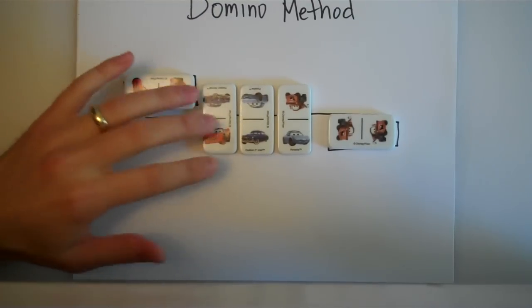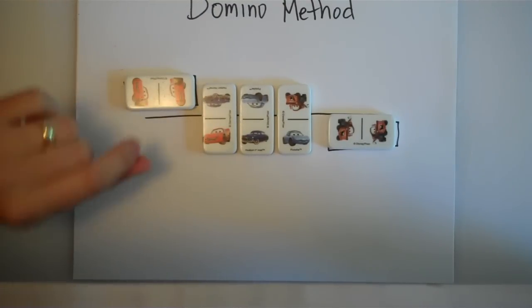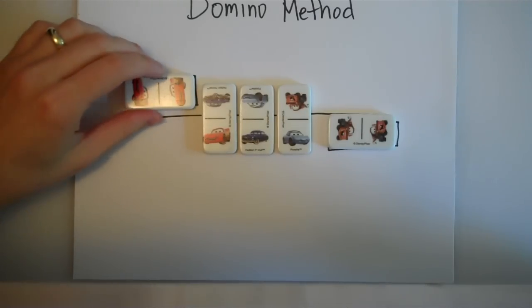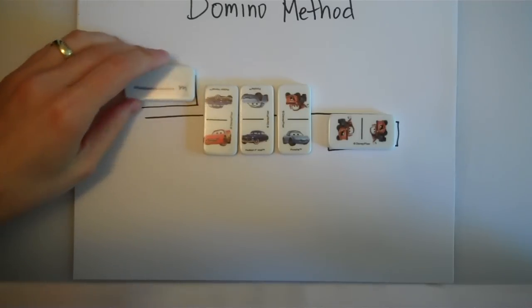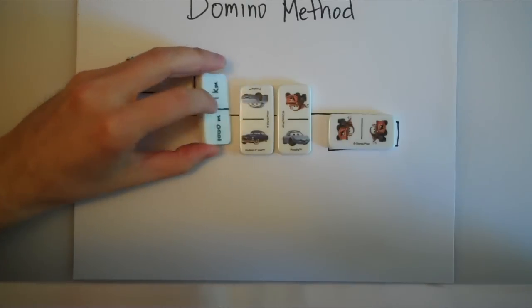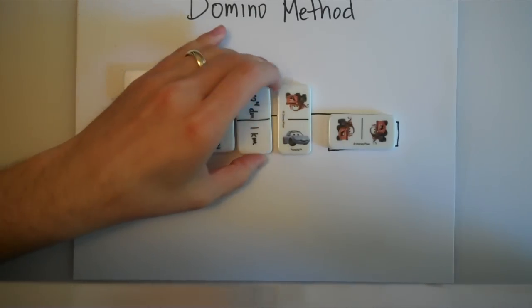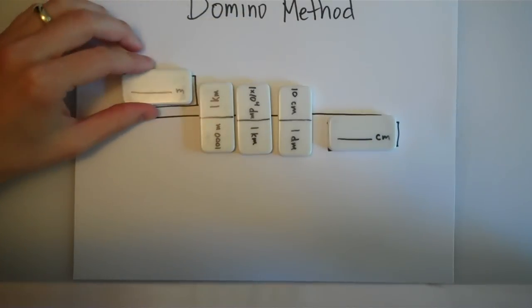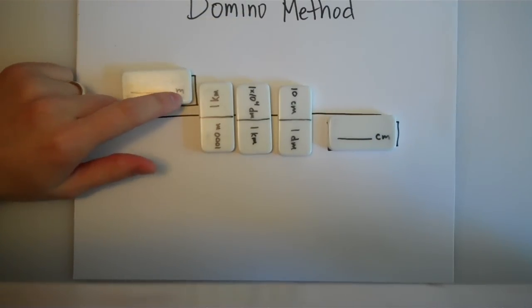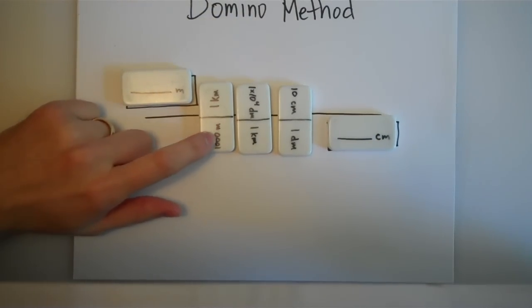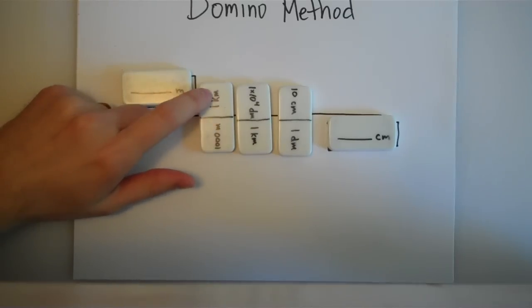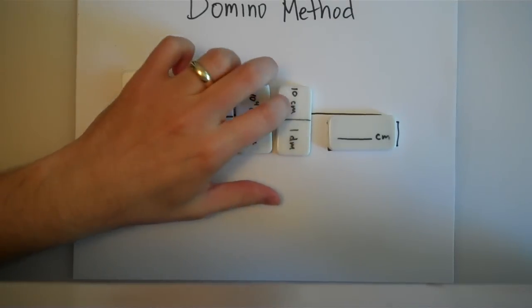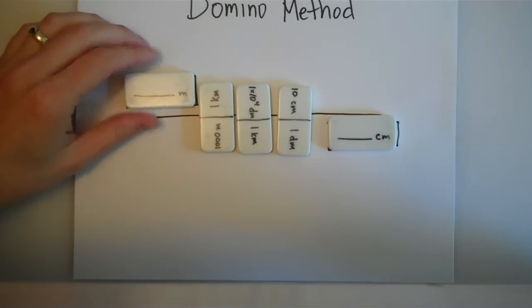Obviously these are just symbols, but the important thing to notice is that it's the symbols or the units that matter when we're doing one of these problems. If I flip over all of these dominoes, you can see that we get the exact same thing as before. Here we have meters, which is a unit. Meters cancels meters, kilometers cancels kilometers, decimeters cancels decimeters, centimeters cancels centimeters.